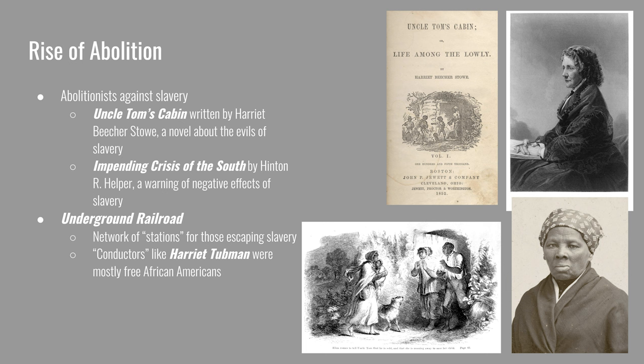There were also abolitionists who assisted enslaved people in their escape. The Underground Railroad was a network of stations or safe houses for those escaping slavery. The safe houses were evenly spaced apart to help enslaved people make their way to a free state or as far north as Canada. The conductors were the people who aided the enslaved up from the South to the North. Harriet Tubman took more than a dozen trips back and forth, helping free about 300 people.